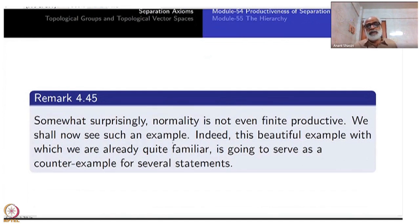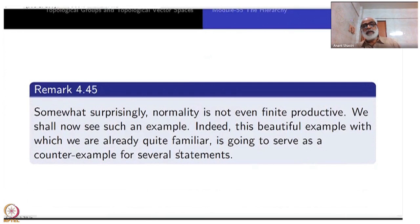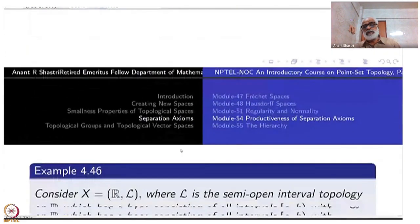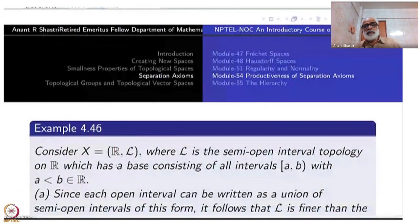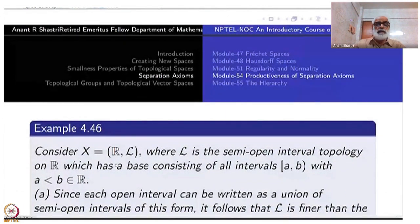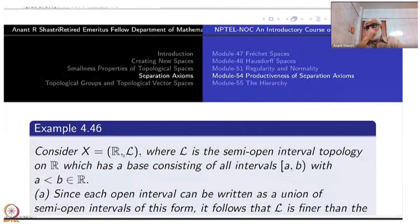We shall now see such an example. It is one of the beautiful examples already familiar to us: the semi-open interval topology. X is the real line with the lower-limit topology, whose base consists of half-closed intervals [a, b) — that is why it's called the lower semi-interval topology.